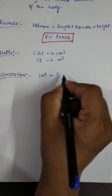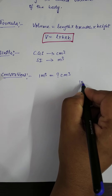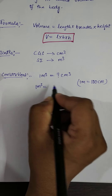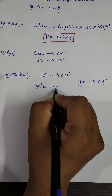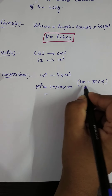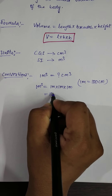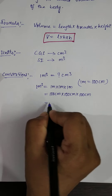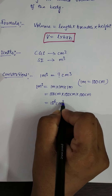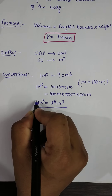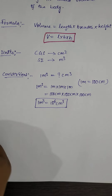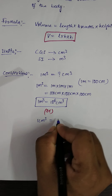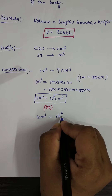Now, conversions. One meter cube is equal to how many centimeter cubes? We know one meter equals 100 centimeters, so 1 m³ = 100 cm × 100 cm × 100 cm = 10⁶ cm³. Therefore, 1 m³ = 10⁶ cm³, or equivalently, 1 cm³ = 10⁻⁶ m³.